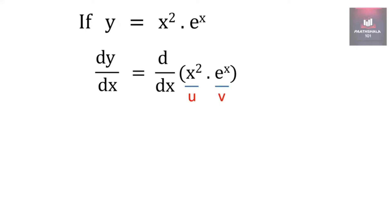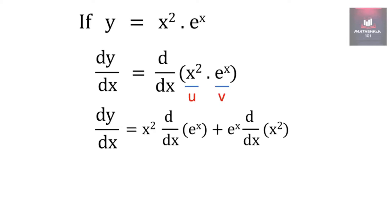Now if we apply the uv rule to it, it will become x square into the derivative of e raised to x, plus e raised to x into the derivative of x square — that is u times derivative of v, plus v times derivative of u.